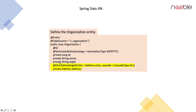Here we are giving the annotation @OneToOne where the target entity is Address.class and cascade type we are giving it as CascadeType.ALL. Here we are saving the address. We are using CascadeType.ALL because otherwise we would have to save the address separately before saving the organization entity. That is the reason why we are using CascadeType.ALL. We can use persist also — CascadeType.PERSIST.